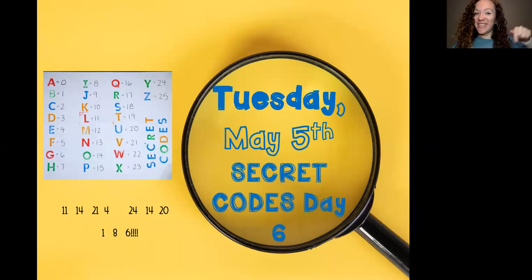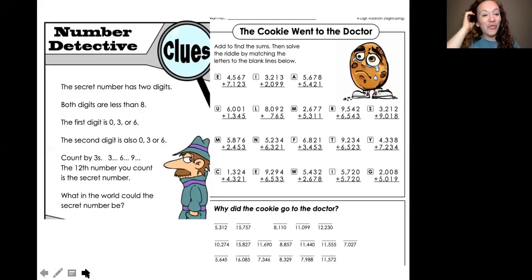It is a terrific Tuesday, so let's get started on our secret codes. Can you figure out the code on this slide? All right, so for your number detective today, the secret number has two digits, so it's a little baby number. Both digits are less than eight. The first digit is zero, three, or six. The second digit is also zero, three, or six.